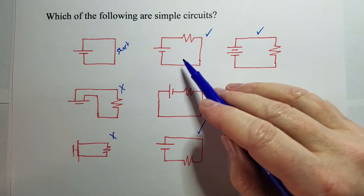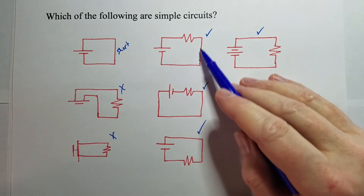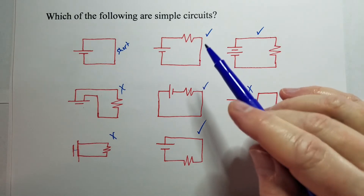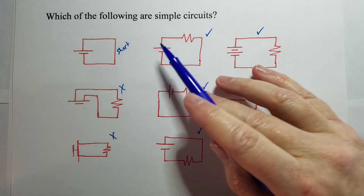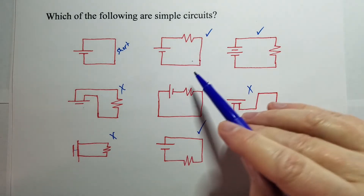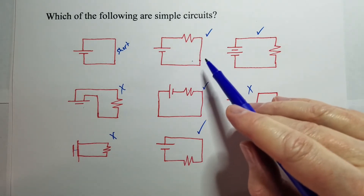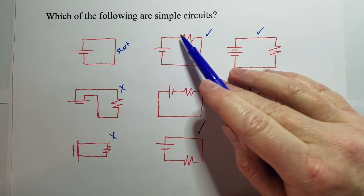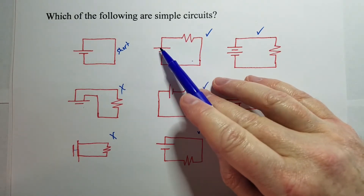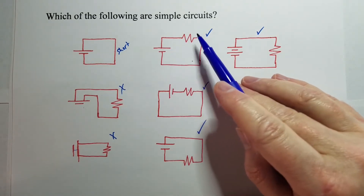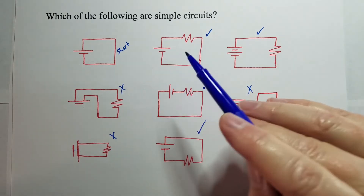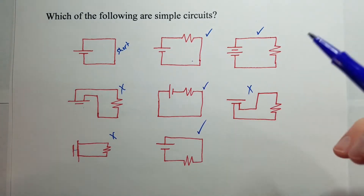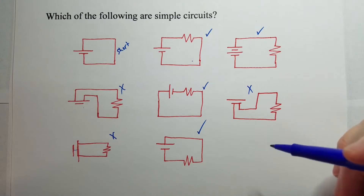We usually try to make circuit diagrams with nice straight lines, because what the circuit diagram does is show you where everything is connected. When you build the circuit in real life it's probably not going to look this neat, but with nice straight lines we can tell what is connected to what. That's the main idea behind a circuit diagram — to show you where all the connections are.